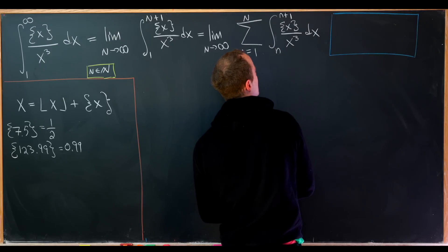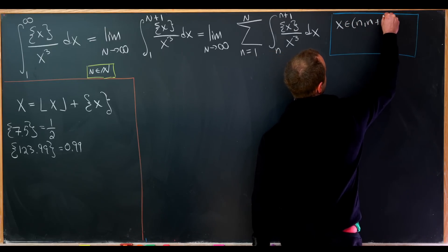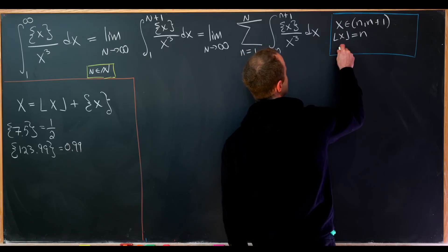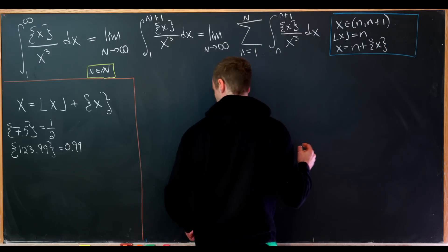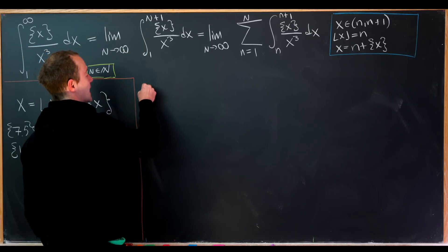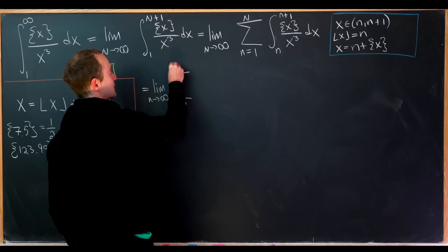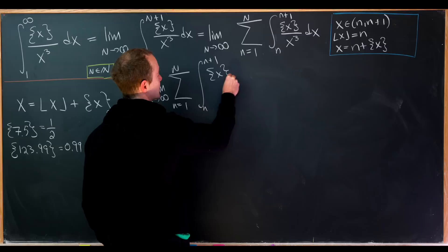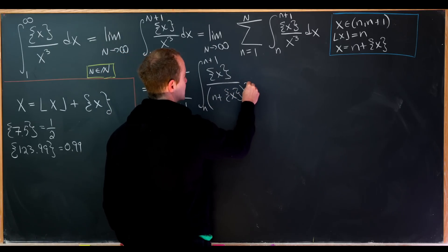We note that X is on the interval from n to n+1, which means the floor of X equals n. That means X itself equals n plus the fractional part of X, using our definition of the fractional part function. Bringing that down, we have the integral from n to n+1 of the fractional part of X over (n plus the fractional part of X) cubed DX.